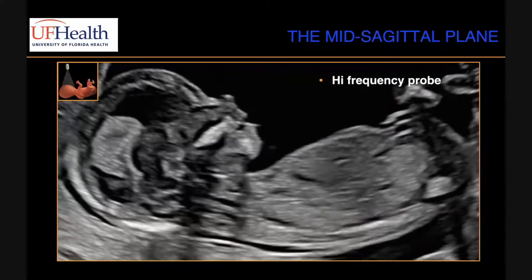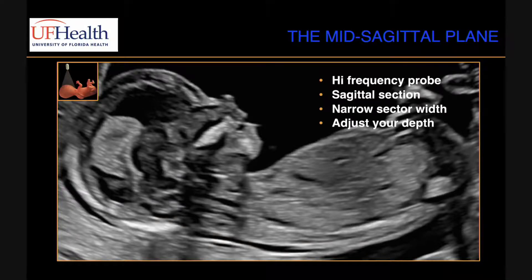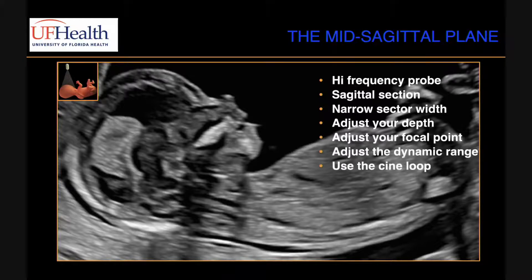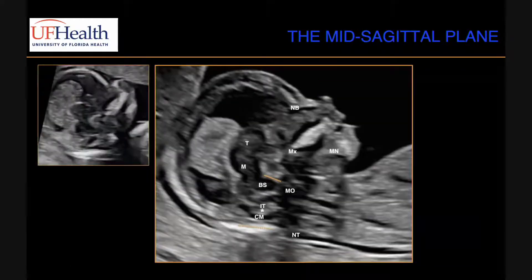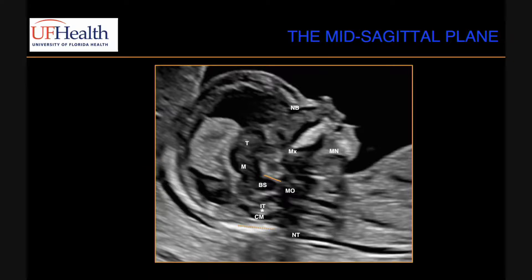To get to this midsagittal plane, you need a high-frequency probe, get your sagittal section, narrow your sector width, adjust your depth, adjust the focal point, adjust the dynamic range, and use CineLoop. Be very mindful, because a lot of times when looking at NTs and midsagittal images, sonographers say an image looks midsagittal, but you should never have a connection between the maxilla and the nasal bone — that's the frontal process. If you do, you're a little parasagittal, and you need to slide the probe parasagittally until that disappears completely.